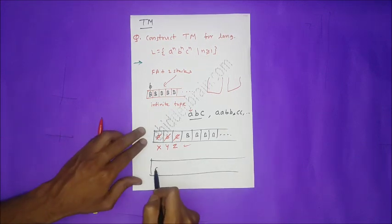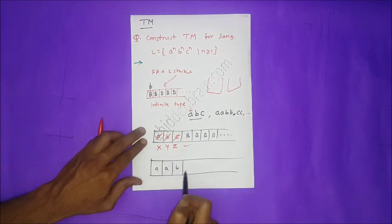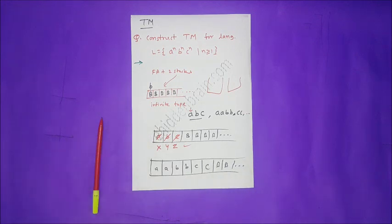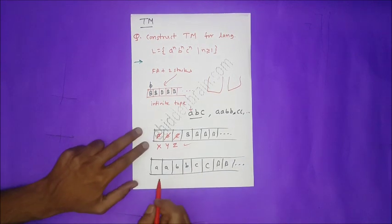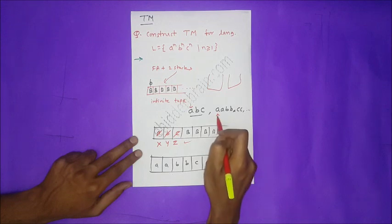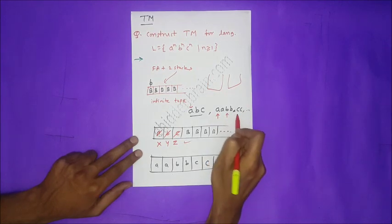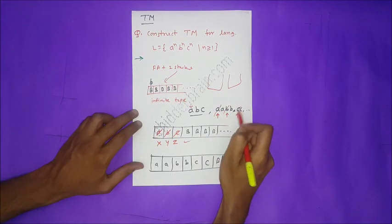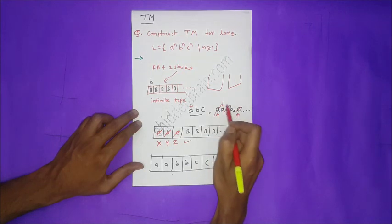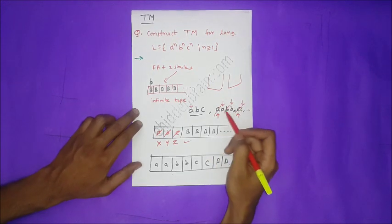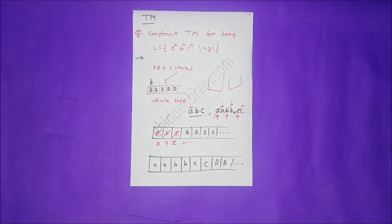Let's use string A, A, B, B, C for a clearer picture. In the first scan: first A is accepted, first B accepted, first C accepted — all three matched. In the second scan: second A, second B, second C matched. This confirms the number of A's equals B's equals C's.